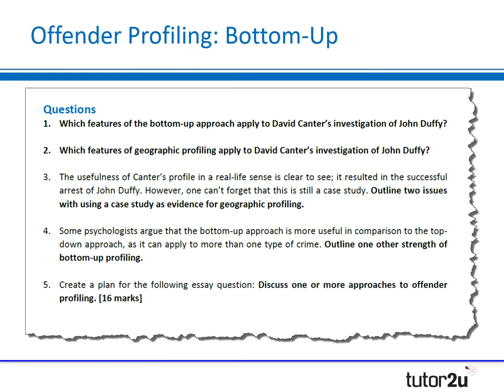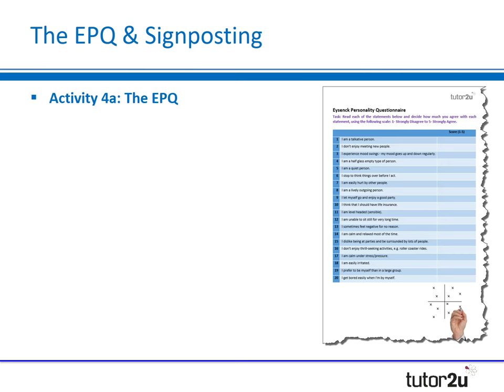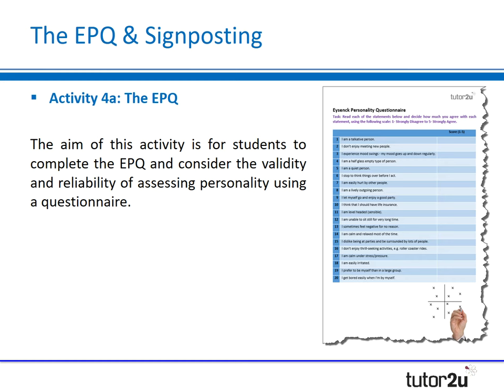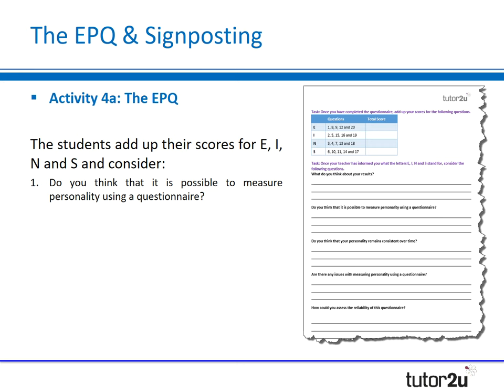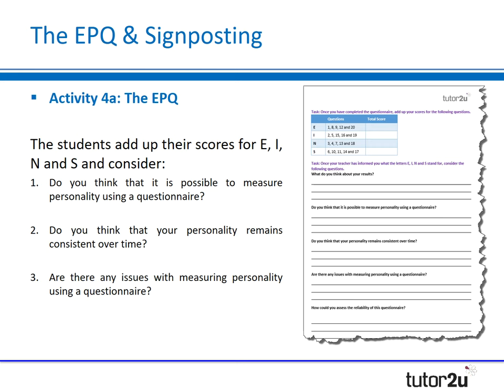The fourth activity is called 'The EPQ and Signposting.' We've produced our own 20-question version of the Eysenck personality questionnaire. The aim is for students to complete the questionnaire and consider the validity and reliability of assessing personality using a questionnaire, and then — more importantly — apply it to criminal behaviour, which is the key point that examiner reports show many students miss. The handout includes scoring so students can score their own questionnaire, along with questions for them to consider in relation to criminal personality.